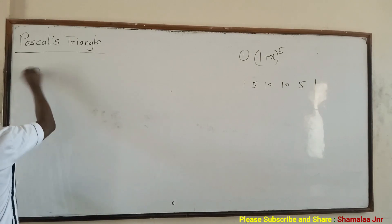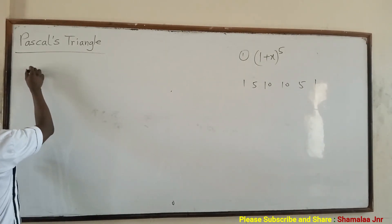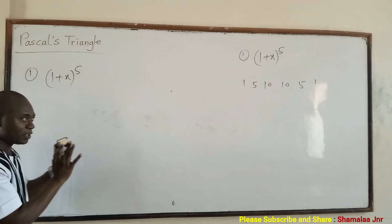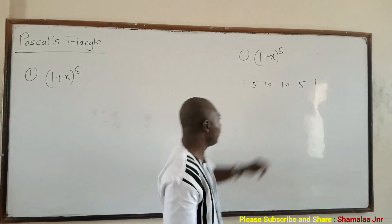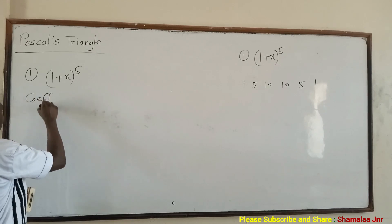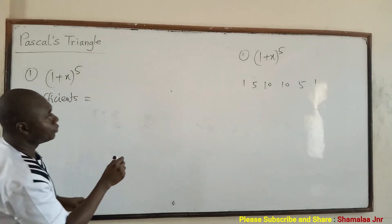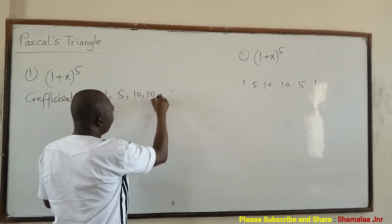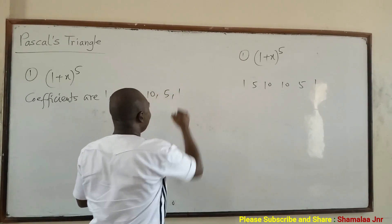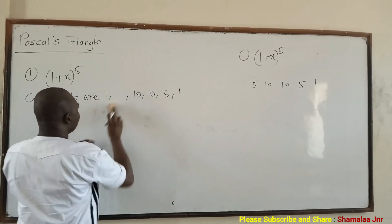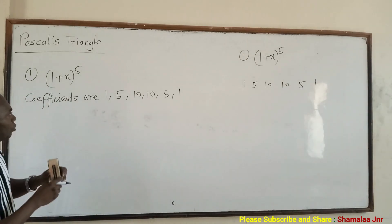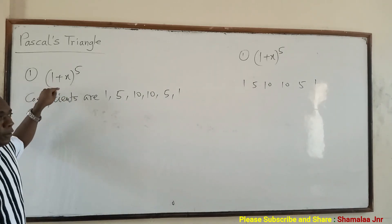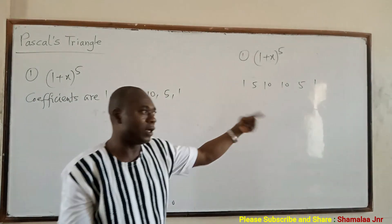Solution: expand (1 + x) raised to power 5 using Pascal's triangle. The coefficients are 1, 5, 10, 10, 5, 1. The powers of 1 will start from 5 and reduce: 5, 4, 3, 2, 1, 0. The powers of x will start from 0 and increase until they get to 5. At every point, the sum of the powers should give you 5, because everything is raised to power 5.